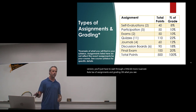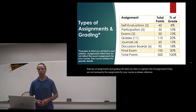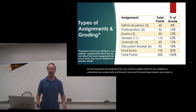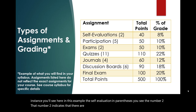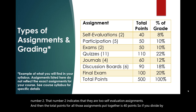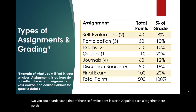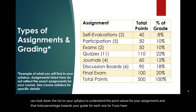Types of assignments and grading. What you see here is a generic list of assignments — these are not necessarily the assignments for your course, so please reference your syllabus to understand your assignments, the point value, and the percentage toward your grade. For instance, the self-evaluation — in parentheses you see the number two, indicating there are two self-evaluation assignments. The total points for all those assignments put together is 40 points, so each self-evaluation is worth 20 points, and together they're worth 8% of your grade. You can look down the list to understand the point values and total percentage toward your grade for each assignment.